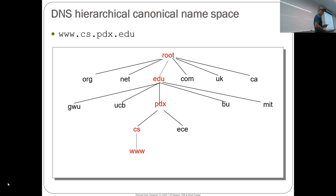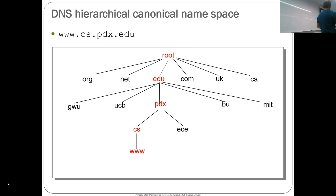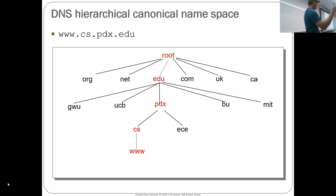They organized the namespace hierarchically. The hierarchy starts on the right and goes to the left — the root is basically an implicit dot at the end of the name, then you go to edu, and then the edu builds a tree from there to get to pdx, with all the other universities. From there you go to the cs subdomain, and then finally a particular host. That's the hierarchical namespace they decided to use.